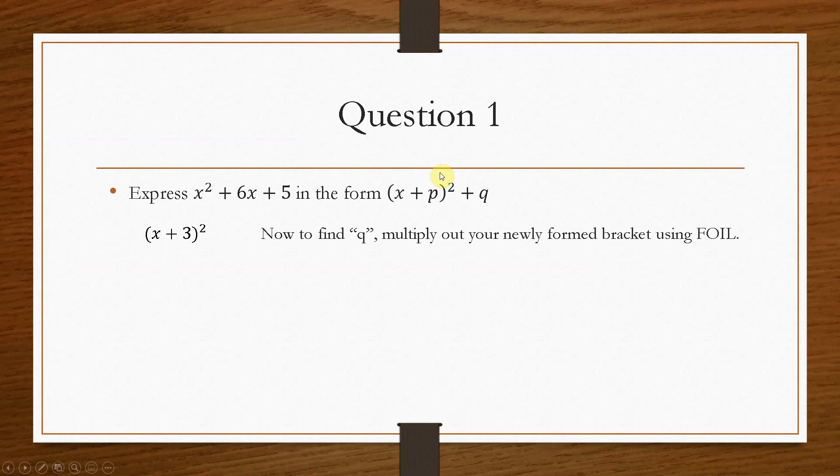So now it's a case of finding the value of q. So the new bracket that we have created, we now need to multiply that out. And we'll do that using FOIL. So we have x squared plus 3x plus 3x plus 9. And then we tidy that up.